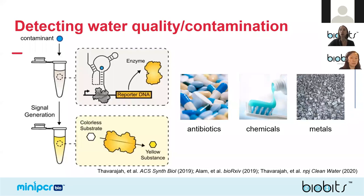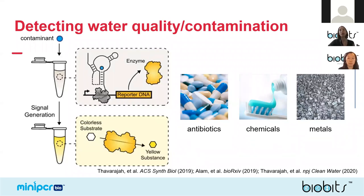This reporter enzyme catalyzes a chemical reaction producing a yellow molecule, so the reaction changes color — reporting that the contaminant is present. Scientists have developed a variety of biosensors that can sense different chemical contaminants or additives in water: antibiotics, metals like lead, and even fluoride. Because these reactions can be freeze-dried and transported without refrigeration, it makes it really easy to take this technology out into the field to test water quality.